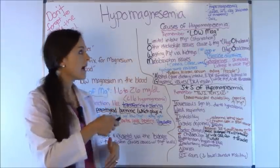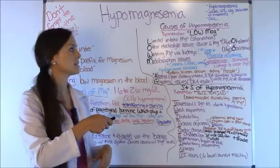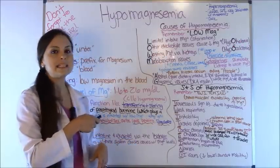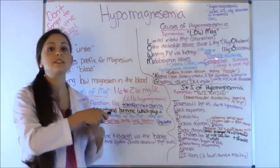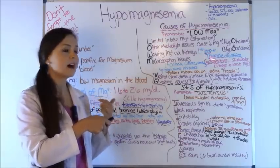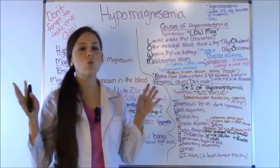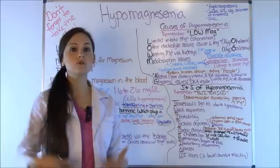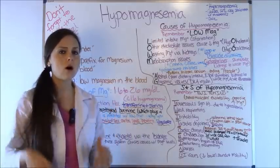O stands for other electrolyte issues causing low mag — hypocalcemia and hypokalemia can cause it. Remember the O in hypo, because when you have low mag levels, you'll also have those low levels. W is for wasting mag in the kidneys. If a patient is on any type of loop or thiazide diuretics, or cyclosporins, they are at risk for low mag levels because these stimulate the kidneys to waste magnesium. M is for malabsorption issues, which gets back to magnesium's absorption in the small intestine. If a patient has a history of Crohn's, celiac disease, or has been vomiting, that can throw off mag levels.